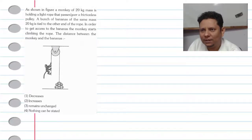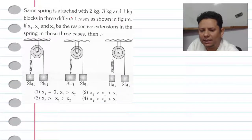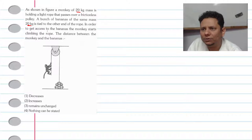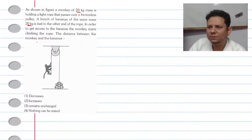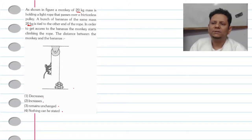The question says: as shown in the figure, a monkey of 20 kg mass is holding a light rope that passes over a frictionless pulley. A bunch of bananas of the same mass, 20 kg, is tied to the other end of the rope. In order to get access to the bananas, the monkey starts climbing the rope. The question is: what happens to the distance between the monkey and the bananas? The options are: decrease, increase, remain unchanged, or nothing can be said.